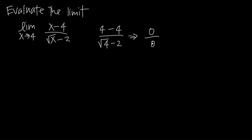That's a problem because we can't divide by 0. This is called an indeterminate form — anything where we have 0 over 0, 0 times infinity, or infinity divided by 0 is an indeterminate form. When you use substitution and get an indeterminate form, it tells you that you can't use substitution to evaluate the limit, so you'll have to try another method.